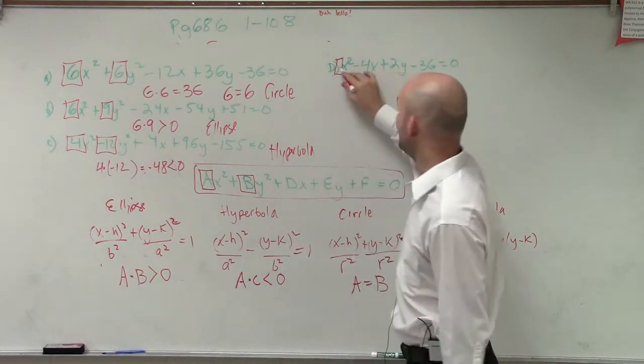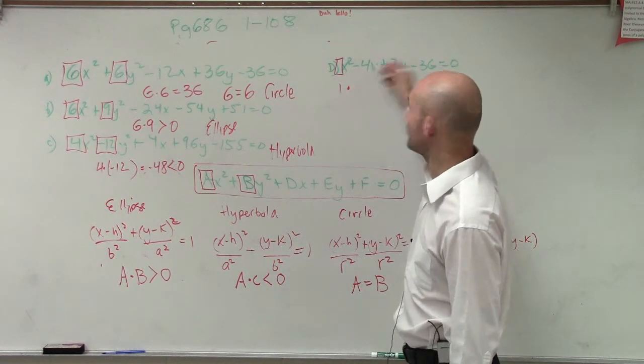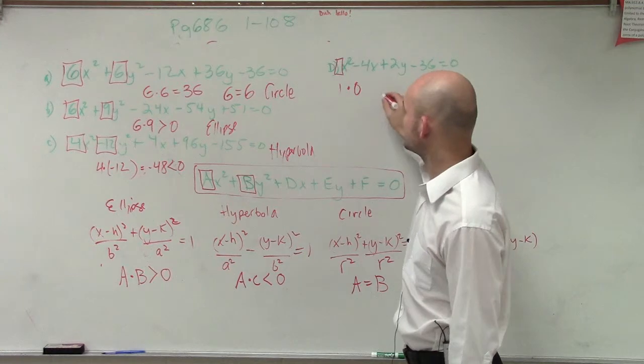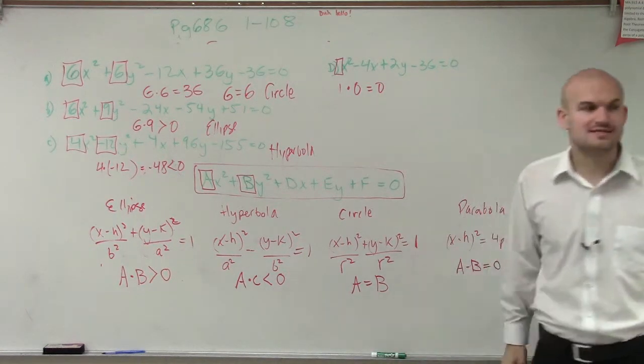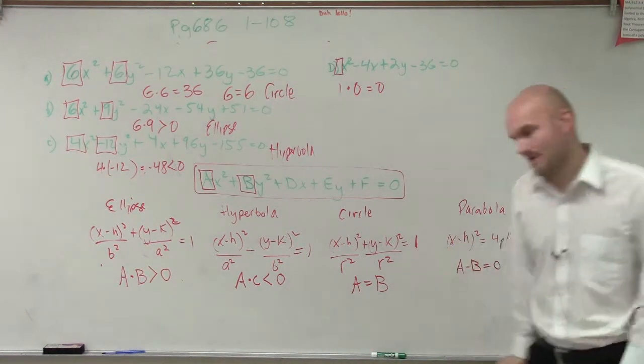And then over here, I have 1 times - I don't have a y squared, do I? So it's 0, which equals 0. So therefore, this has to be a parabola.